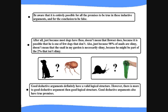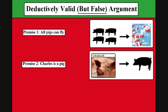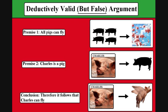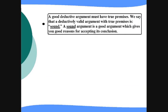Good deductive arguments have valid logical structure. However, there is more to deductive arguments than good logical structure — good deductive arguments also have true premises. To make this point hit home, look at the following argument. Premise 1: All pigs can fly. Premise 2: Charles is a pig. Conclusion: Therefore, it follows that Charles can fly. The premises of this argument are quite obviously false, but the conclusion that Charles can fly logically follows from the premises. It's a deductively valid argument with good logical structure, but it's a bad argument because the premises are false. A good deductive argument must have true premises. We say that a good deductively valid argument with true premises is called a sound argument — a sound argument is a good argument, which gives you good reasons for accepting its conclusion.